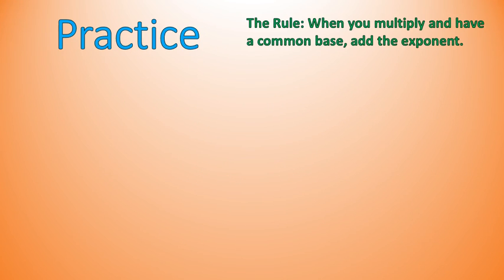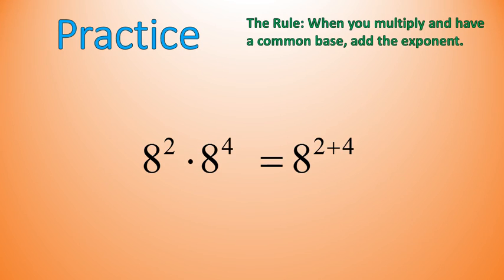Let's practice. Go ahead and try this one out. If you feel comfortable, try it on your own; if not, just keep watching. The problem is 8 to the power of 2 times 8 to the power of 4. Welcome back — I hope you tried that. Remember the rule: you're just adding the exponents. So I'm going to write it as 8 to the power of 2 plus 4. And 2 plus 4 is 6, so that gives us 8 to the power of 6. If you were able to just add the exponents, that probably saved you a little bit of time.